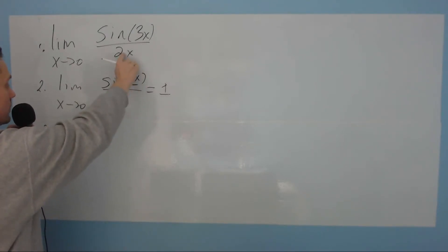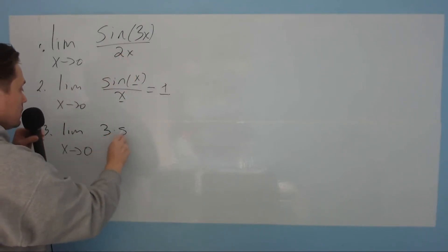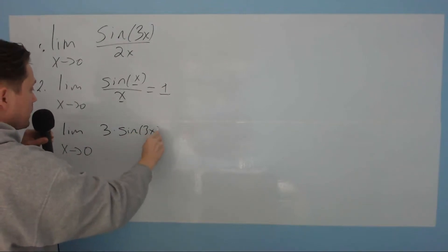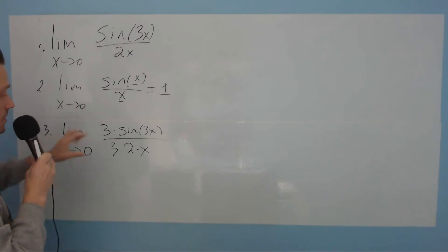So this is what you can do. You can multiply it by 3 like this. And then on the bottom, do the same thing. It becomes 3 times 2 times x. You can do this because 3 divided by 3 is just the number 1. You're free to multiply it by 1 as needed.